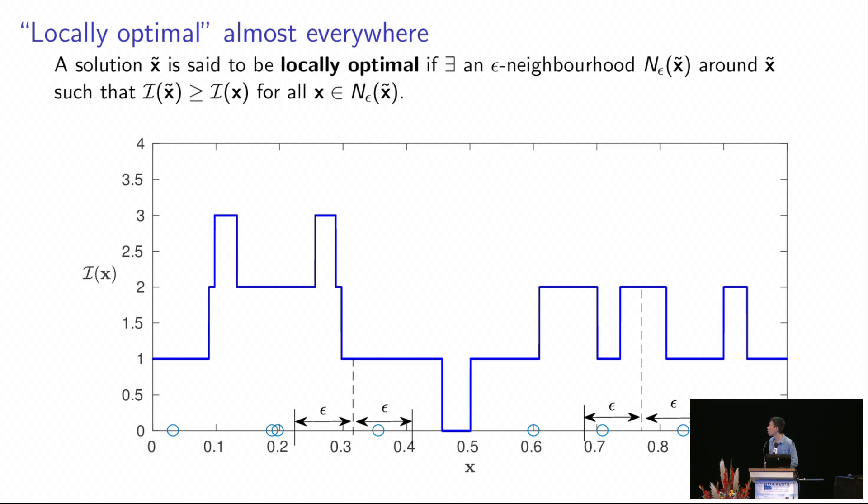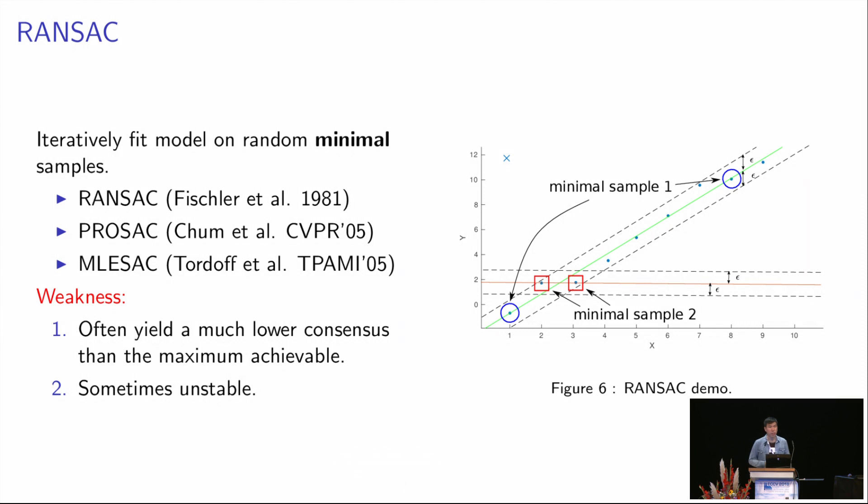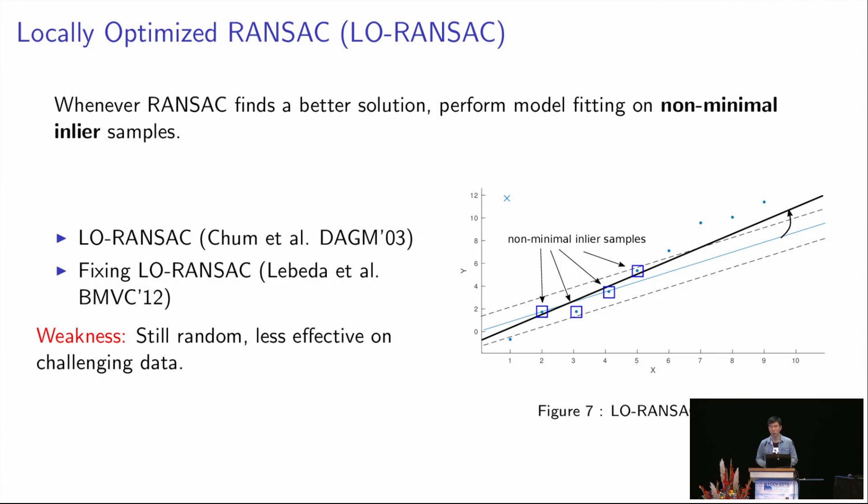Previously, many applications preferred to use RANSAC for robust fitting. Although this algorithm is very fast in practice, it often yields a much lower consensus than the maximum achievable, as we will see later in the results. And due to the random behavior, it is sometimes unstable.